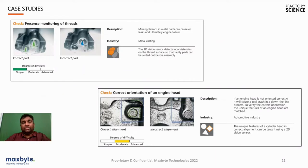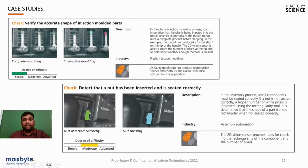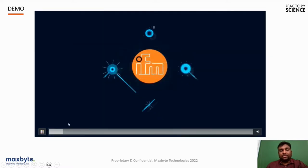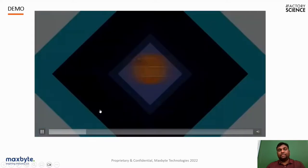These case studies show how a vision system helps in practice. Thread presence monitoring — the correct part versus an incorrect part — can easily be identified. The orientation of a component is another use case that can be identified, as well as the accurate shape of injection-molded parts: if the shape is incorrect, it will be automatically rejected. Detecting whether a nut has been inserted and seated correctly in an assembly can also be easily detected.